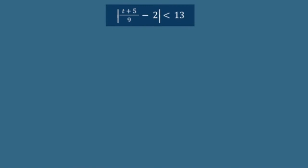Looking at another one: if I can get what's inside to be smaller than 13, that will satisfy the requirements. But I can't let it get too small, because if what's inside becomes negative 14, the absolute value makes it positive 14, and 14 is not less than 13. So I'm restricted on one end, and on the other end I need to keep this value bigger than negative 13. I have to stay in the zone from negative 13 to positive 13; if I get outside that zone, I make this inequality untrue.